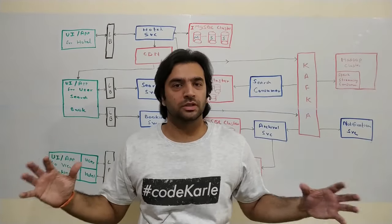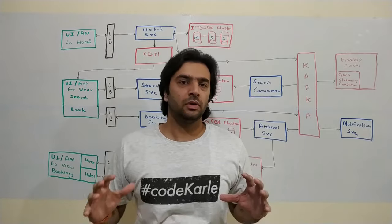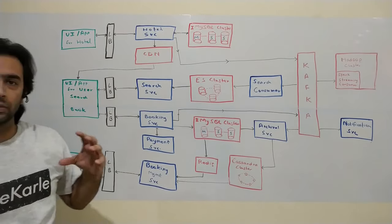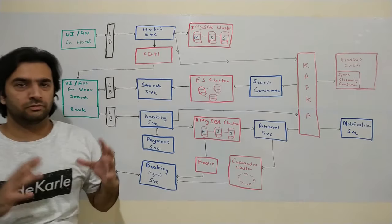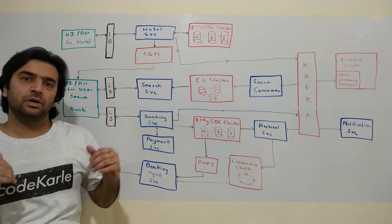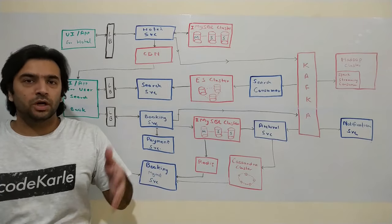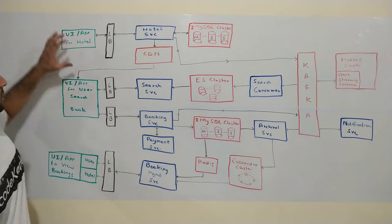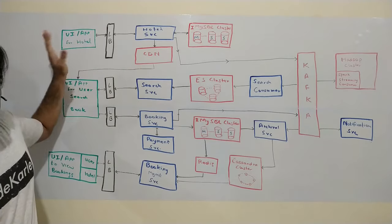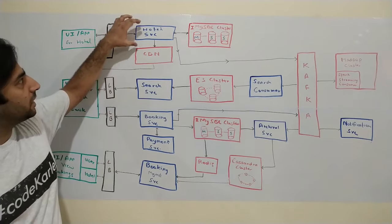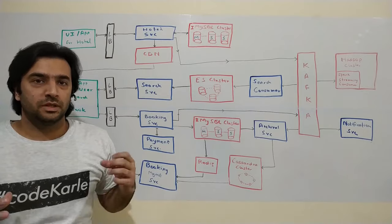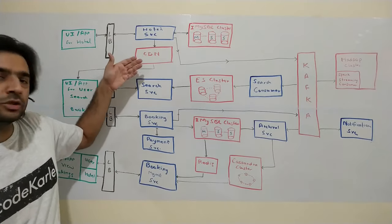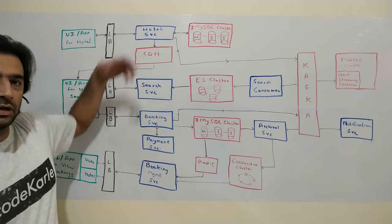Now let's look at the overall design and how data flows within each component. The whole business flow starts with a UI given to hotel managers — either a website or mobile app — through which they onboard onto our platform and modify their property. This UI talks through a load balancer to a hotel service, which manages hotel onboarding and management. There could be multiple nodes of this service, making it horizontally scalable.